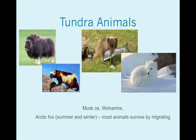Tundra animals: musk ox, wolverine. There are two pictures of the arctic fox — one in summer and one in winter. Like the snowshoe hare, their adaptation is to gradually phase into a white fur pattern. However, most animals survive the very long, harsh arctic winters by just leaving. There's a whole assortment of animals that are there for only a couple months out of the year during that really green and fertile summer season.